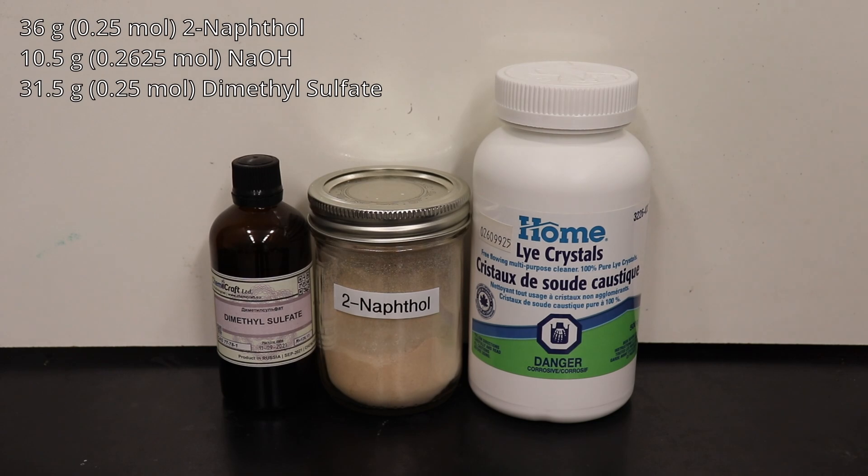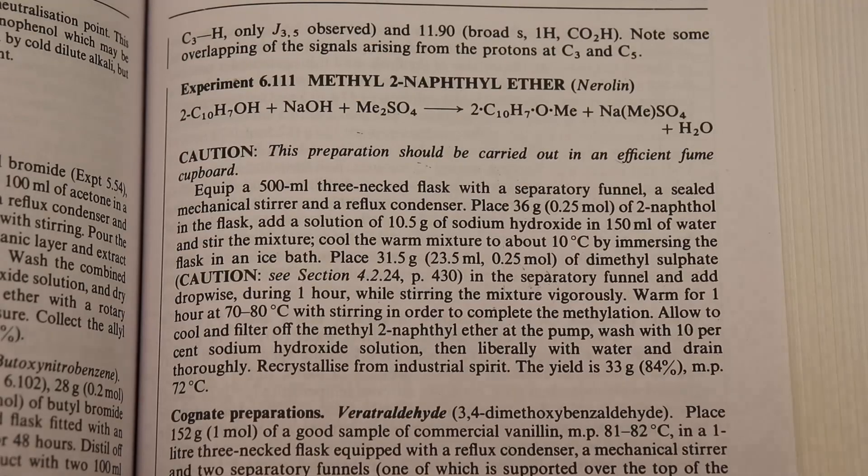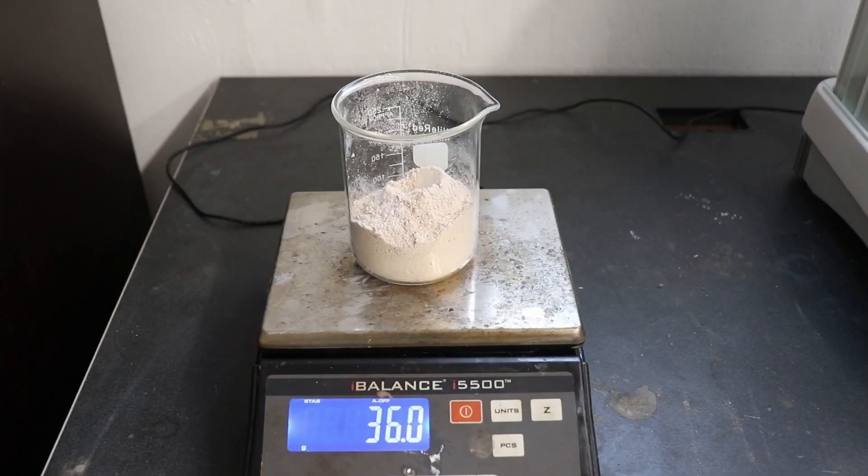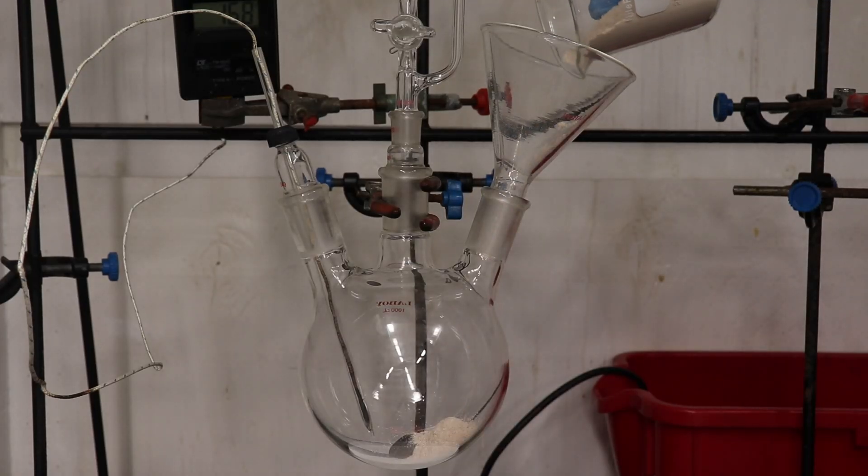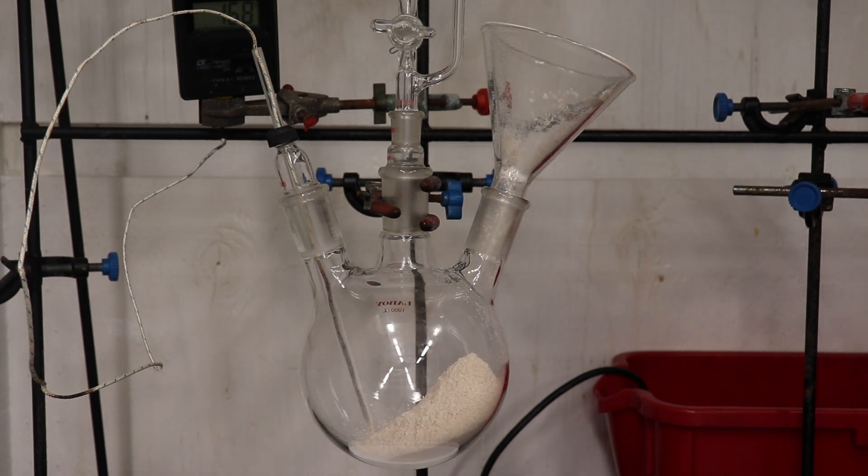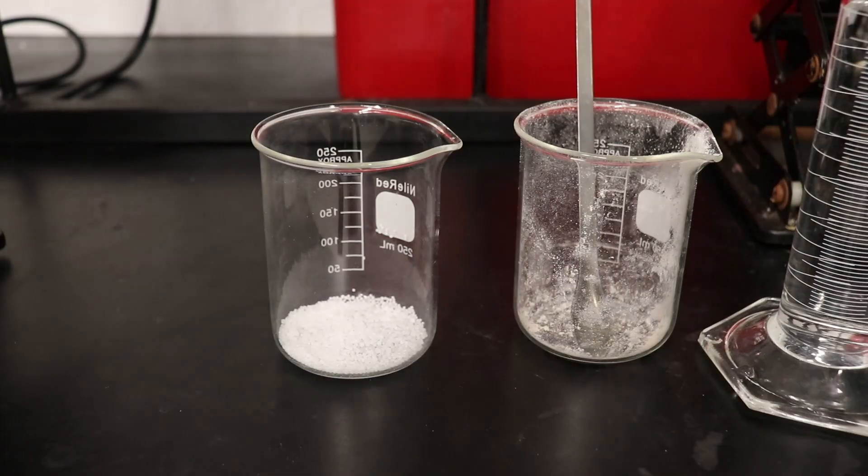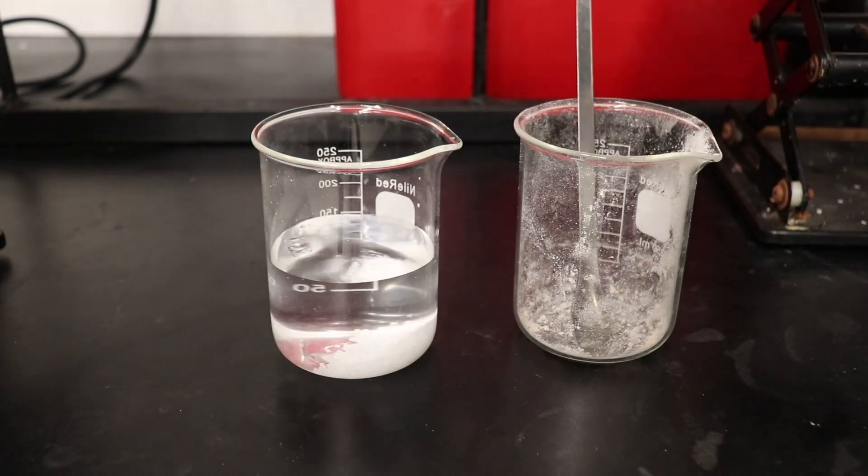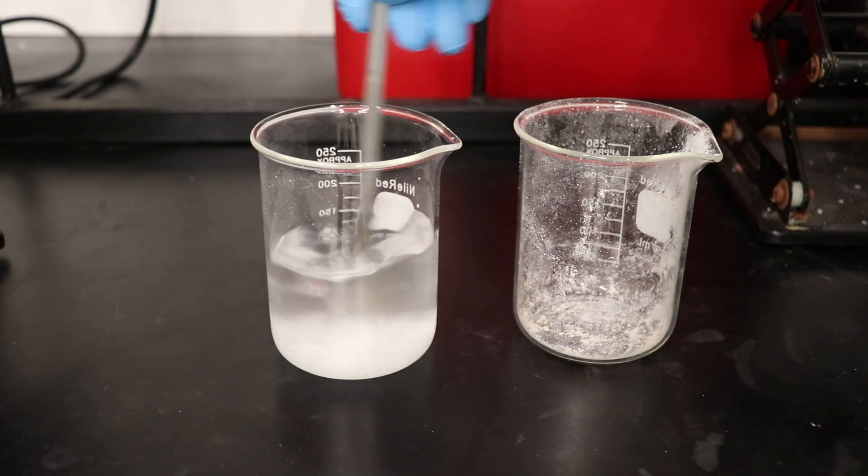To begin, I'll be showing the preparation with dimethyl sulfate on the 2-napthol that I prepared in the previous video. I am following the procedure as laid out in Vogel's Practical Organic Chemistry. 36 grams of 2-napthol was measured out and added to a 3-necked 1-liter round-bottom flask with a thermocouple probe and addition funnel. Then a solution was prepared with 10.5 grams of sodium hydroxide in 150 milliliters of water.